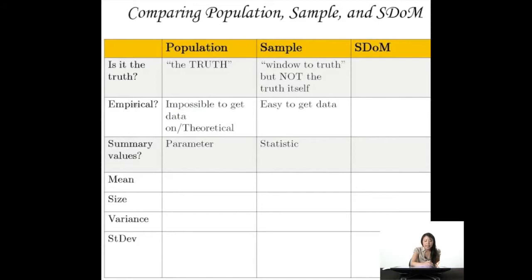The problem is, it's really hard to get empirical data, stuff where you actually go out and get data from the world. It's impossible to get data on, and so largely, it's either theoretical or we just don't know what the population is like. Or when we do have known populations, they might be small populations or very well studied. And the summary values for the population are called parameters, right?